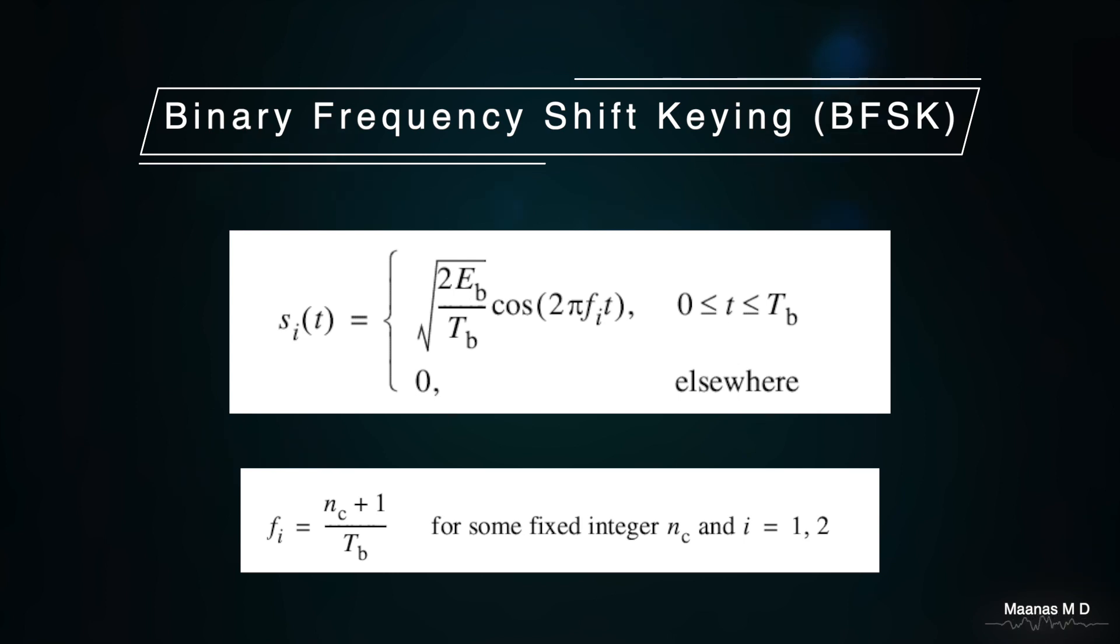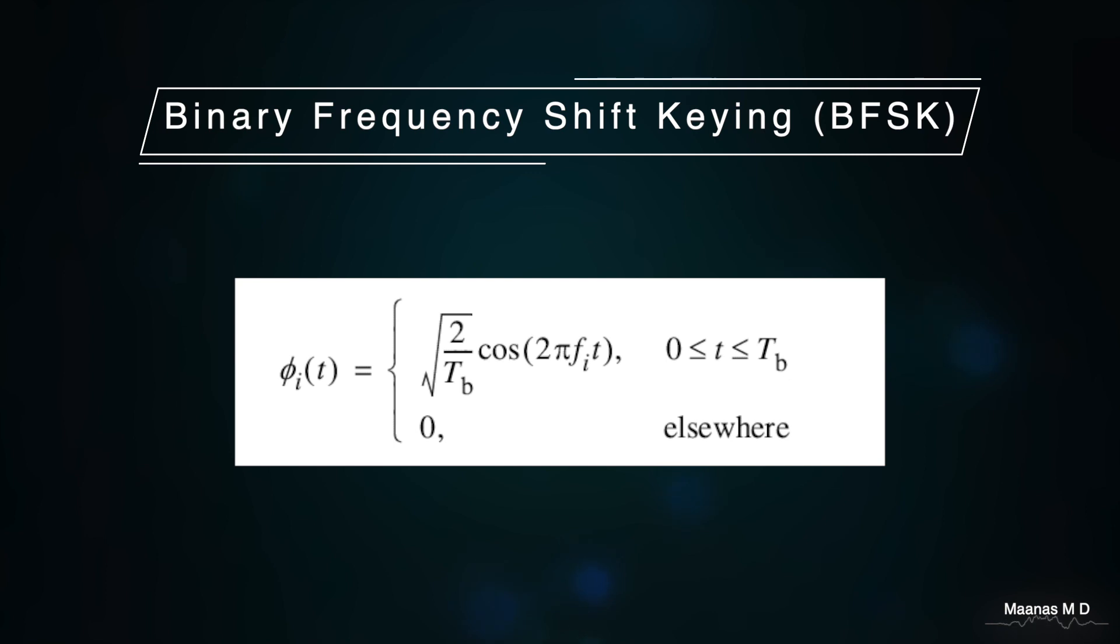Having these two symbols, now using Gram-Schmidt orthogonalization we can find the basis functions. Since the symbols in FSK are orthogonal to each other, each symbol will have a unique basis function. We can divide the symbol by the energy to find the basis function. The basis functions are displayed on the screen.